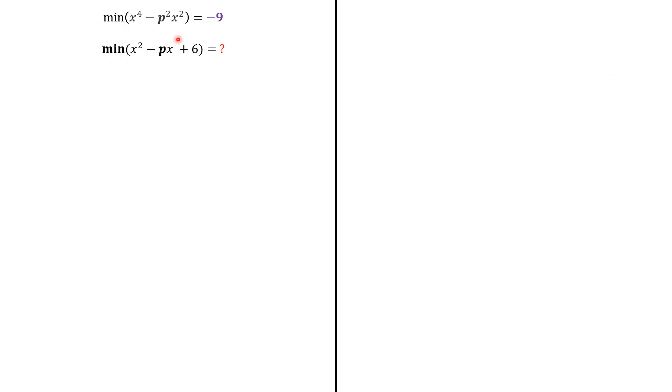We are given that the minimum value of this function is -9, and we'd like to find the minimum value of x² - px + 6. The key here is that we're going to use the completing the square method. Now, we focus on this first function.